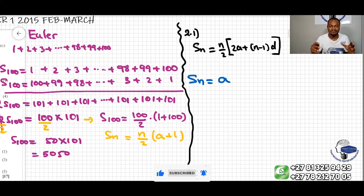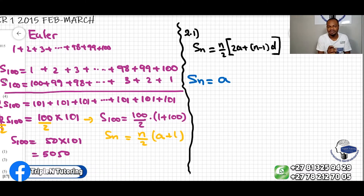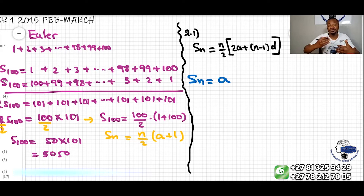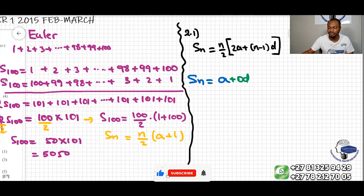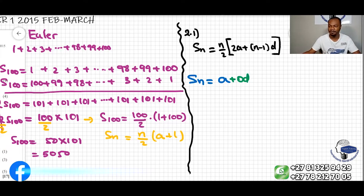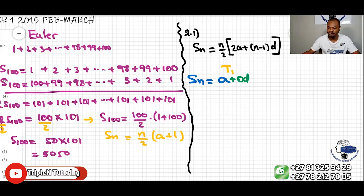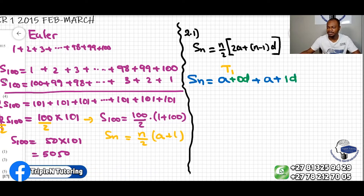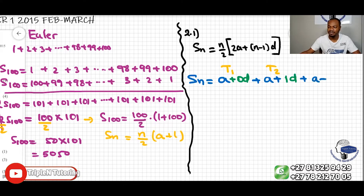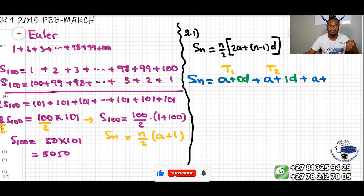At this first term, the constant difference added is zero, because we start counting the constant difference from the following term. So I can write it as a plus 0d, just for illustration to make the sum pattern clear. Continuing: the second term is a plus 1d, and the third term is a plus d plus d, which makes a plus 2d.